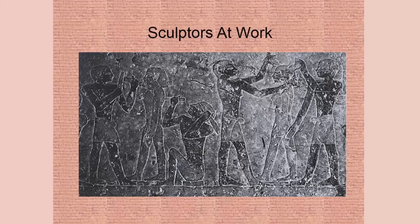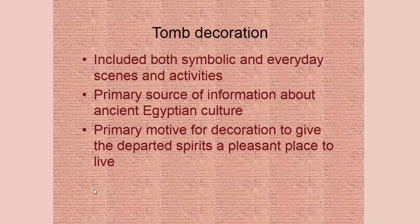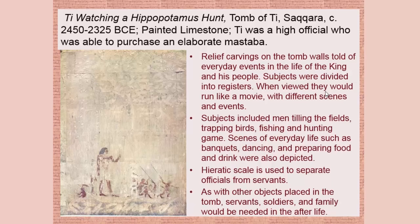You can see that quite a few hundred years after Narmer, the canon of proportions has not changed. This tomb decoration includes symbolic scenes and everyday scenes, and it's really our main source of information about these people. The primary motive is to give the departed spirits a pleasant place to live. This particular painting is in the tomb of Ti at Saqqara, from around 2450 BCE. Ti was a high official, so he had the money to buy an elaborate mastaba.